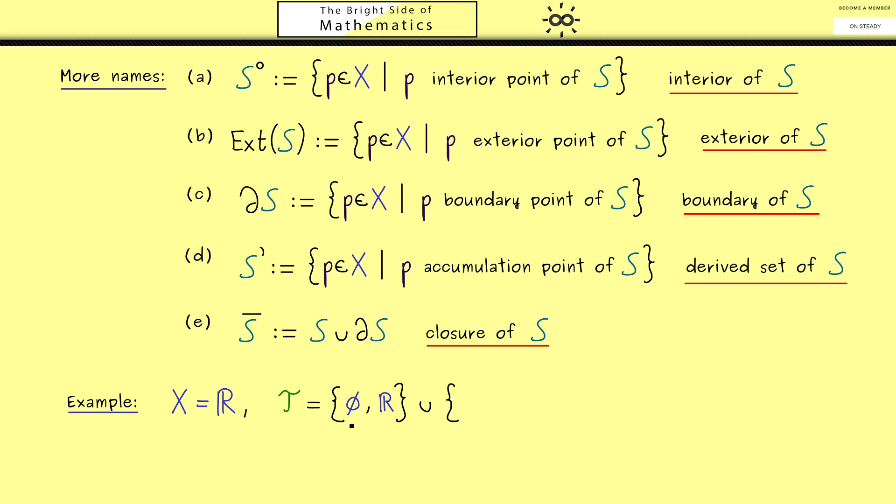First, we already know the empty set and the real number line should be included in the topology. However, all the other open sets should be half-bounded intervals. Therefore, each non-trivial open set is such an interval that starts with a real number a and goes to infinity.